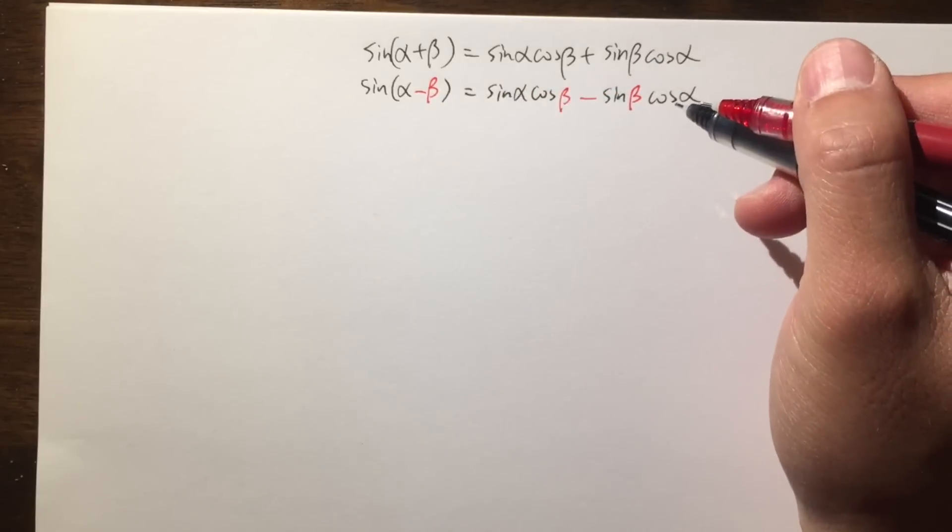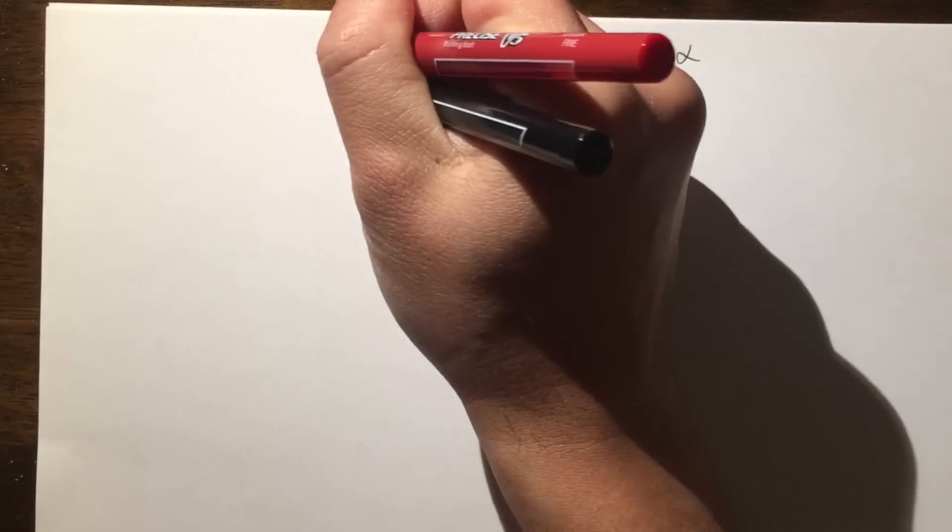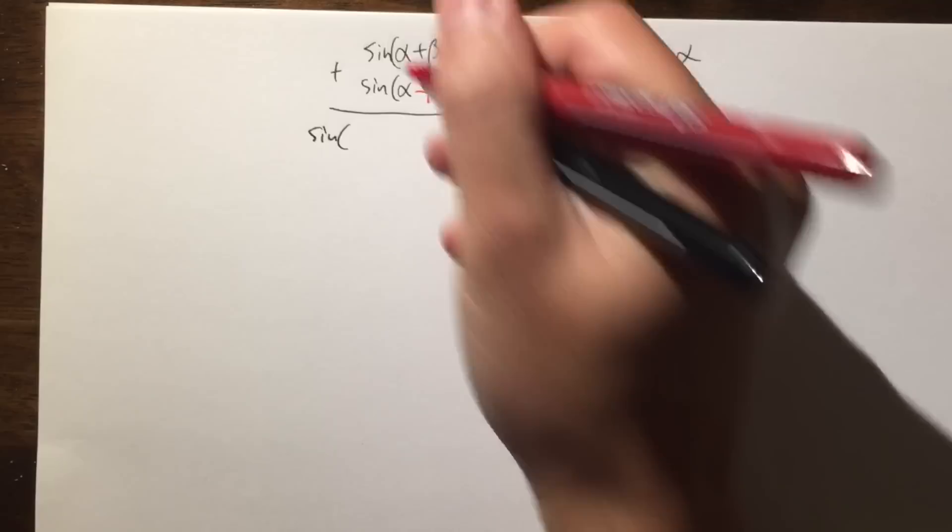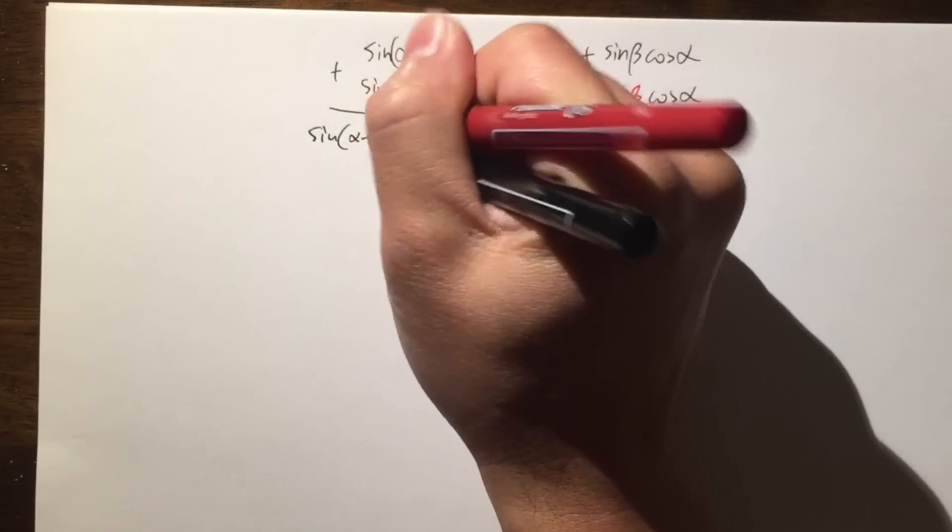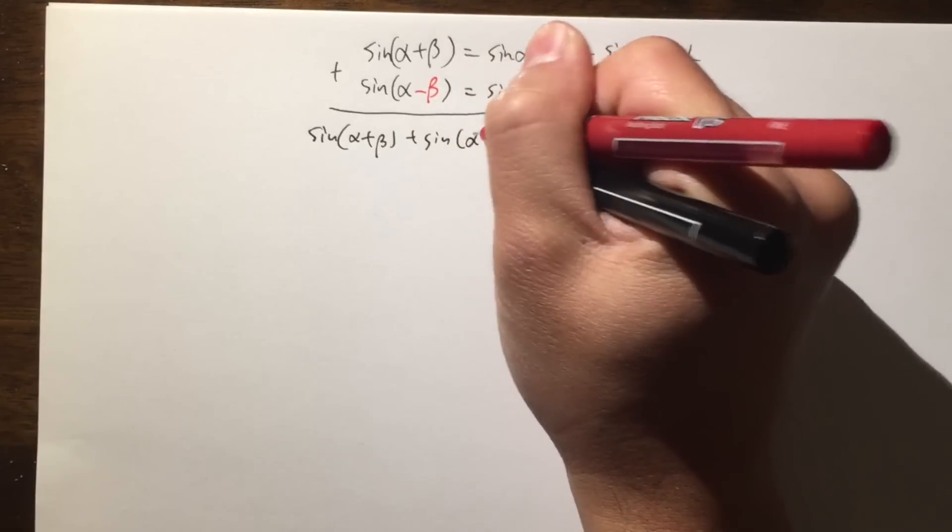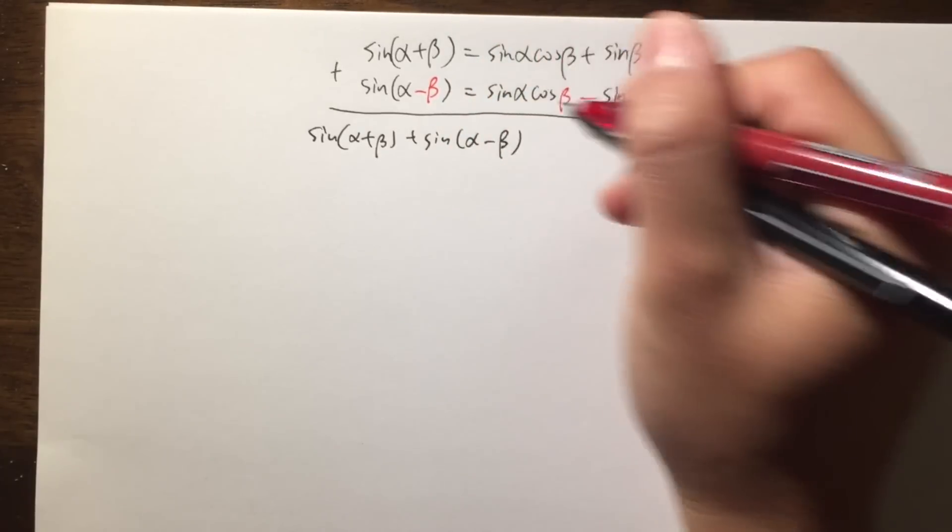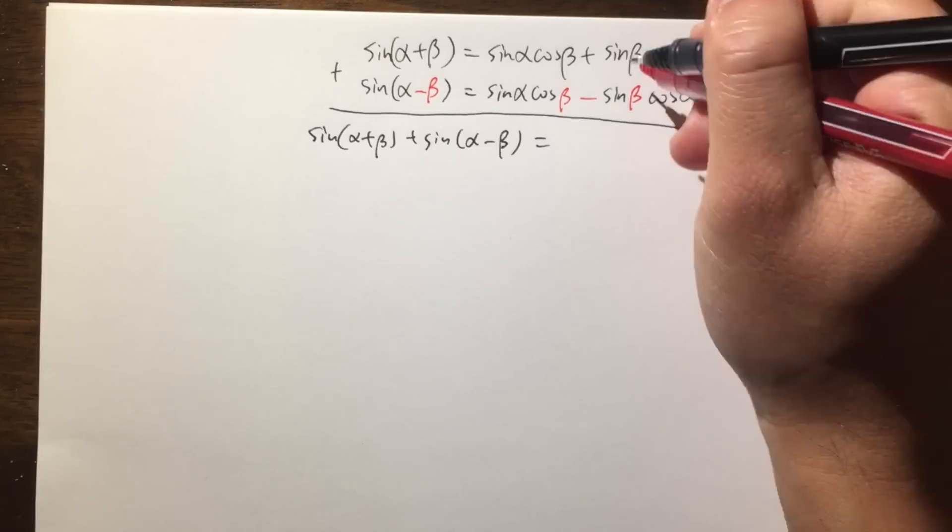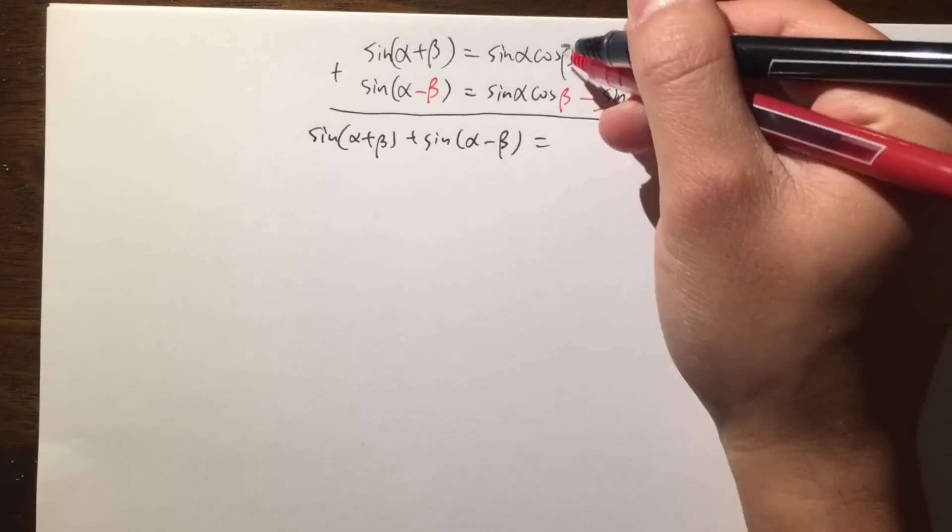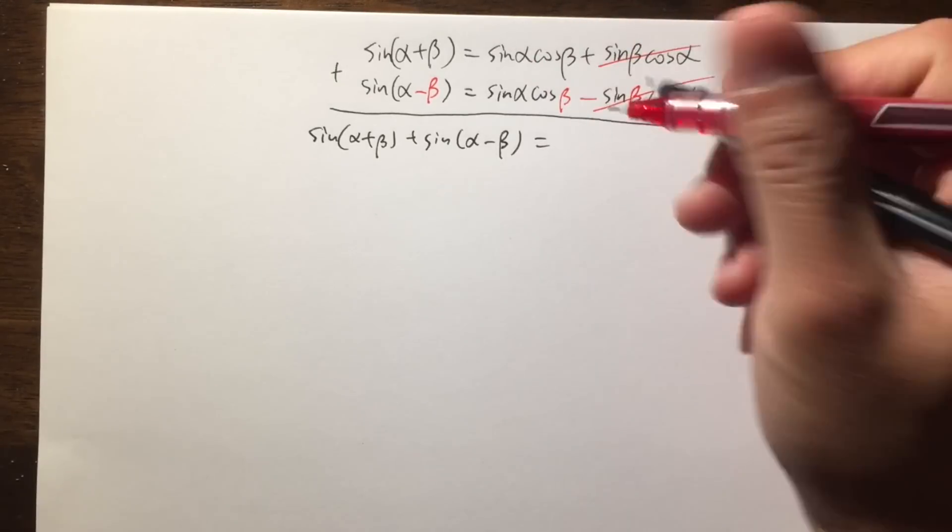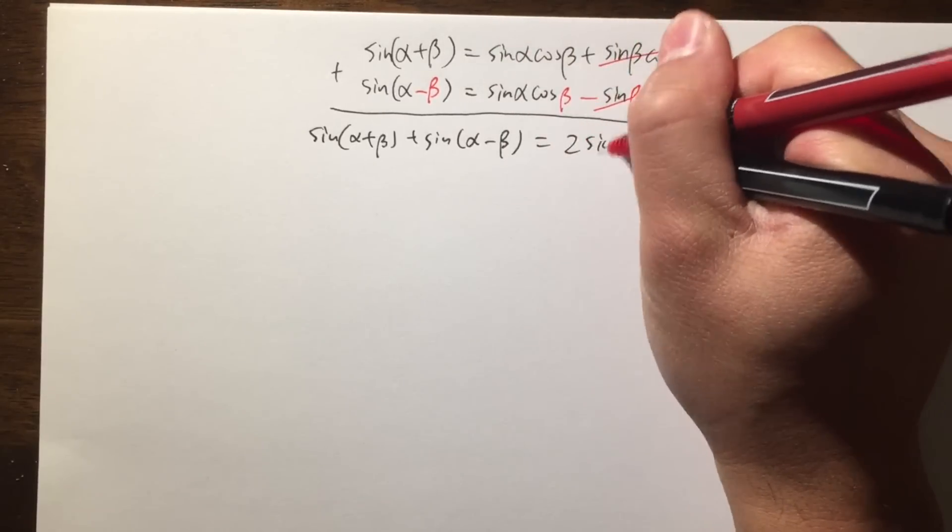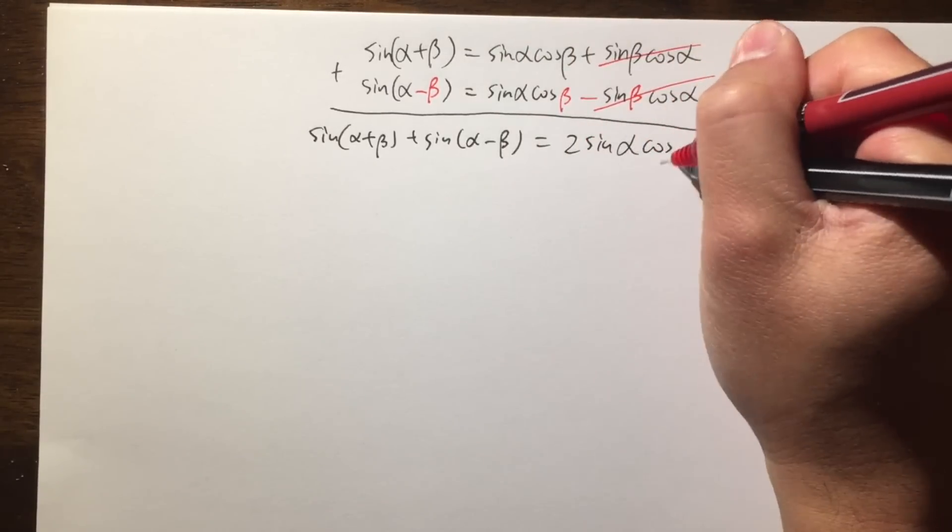Anyway, from these two equations that we can see, we can add them up. And we see that on the left-hand side, we will have sine of alpha plus beta plus sine of alpha minus beta. And this is equal to, well, this and that cancel each other nicely, right? And this and that are the same. So we have two of them. So that's equal to 2 times sine alpha times cosine beta.